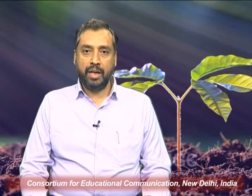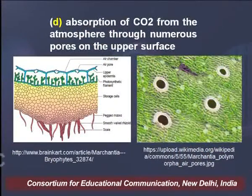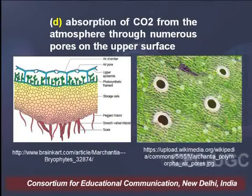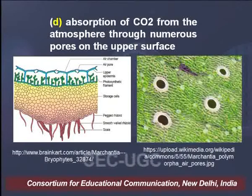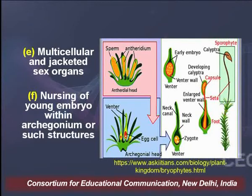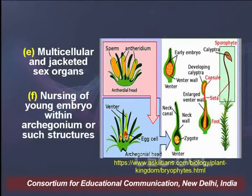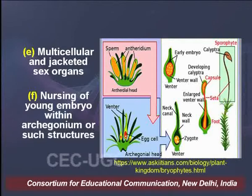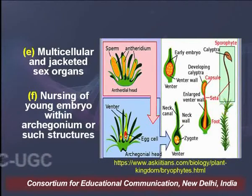These specialized epidermal cells had pores which later evolved into stomatal pores. They helped in absorption of CO2 from the atmosphere through numerous pores on the upper surface. Similarly, certain modifications took place at the lower epidermal cells. The sex organs are now multicellular and jacketed, ensuring better protection of male and female gametes. Nursing of young embryo within the archegonium or any such structure allowed better chances and rate of survival of the sporophytic generation.